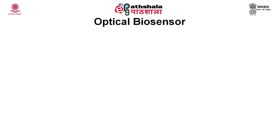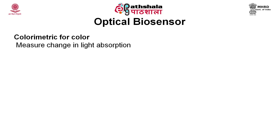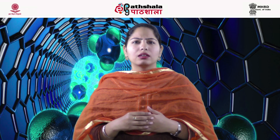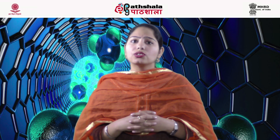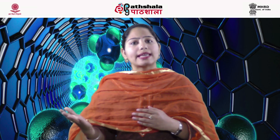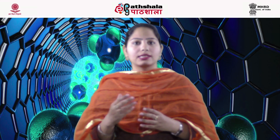Next, we will talk about optical biosensors. As per their optical properties, these can be divided into two types: one is colorimetric, which measures the change in light absorption, and the other is photometric, which depends upon the change in light intensity. The photon output for a luminescent or fluorescent process can be detected with photomultiplier tubes or photodiode systems. Technically, optical biosensors are divided into two types: one uses fiber optic as the transducer, and in the second case surface plasmon resonance is used as the transducer.